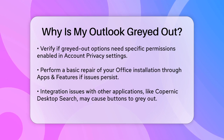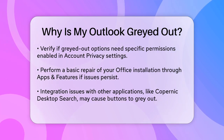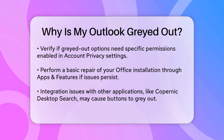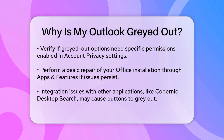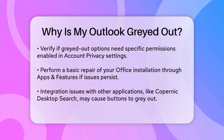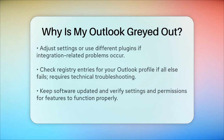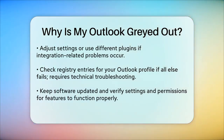In some cases, the problem could be related to how Outlook is integrated with other applications or services. For example, if you're using Copernic Desktop Search, the Outlook icon might be grayed out if the free trial does not include Outlook indexing or if your Outlook version is not supported. You might need to adjust settings or use a different plugin to resolve this.